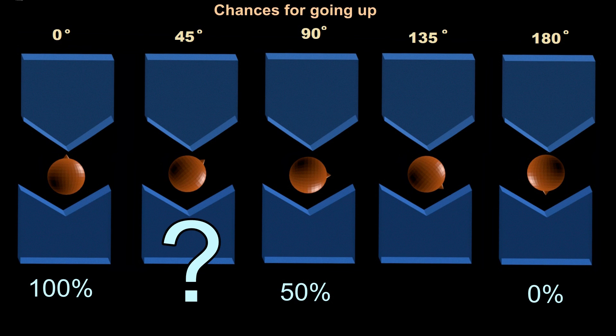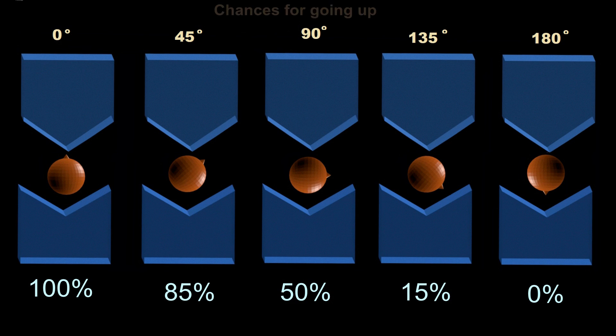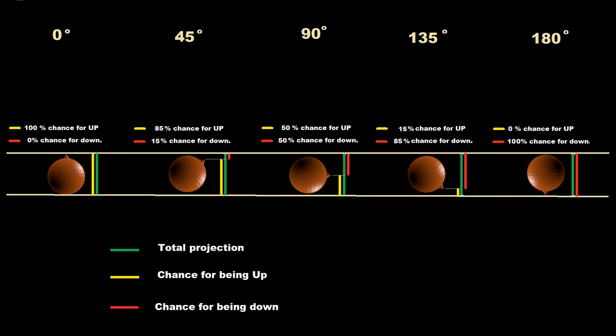What is the chance of going up if the angle is 45 degrees? That is not 75%, but 85%. If the angle is 135 degrees, then the chance of going up is 15% and going down is 85%. We can understand this by projecting the spin point location to the measuring orientation.